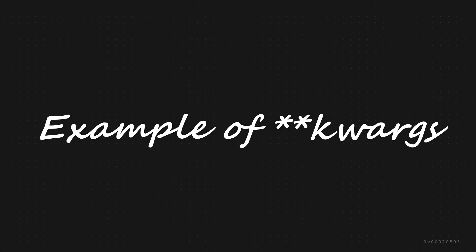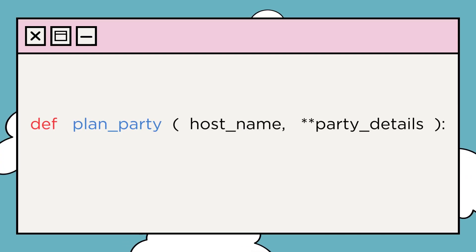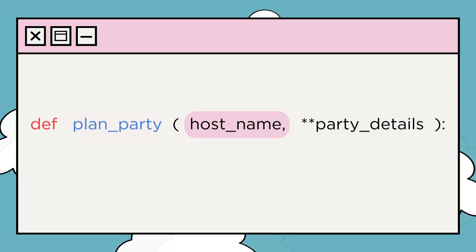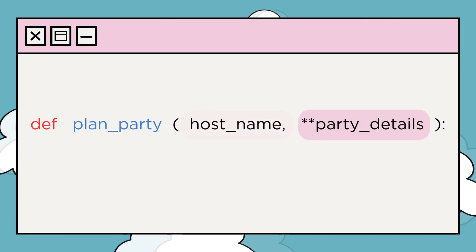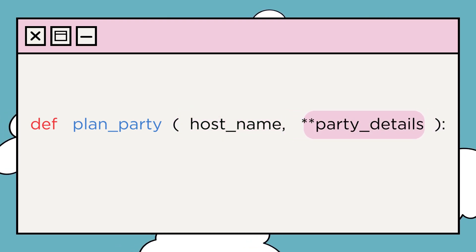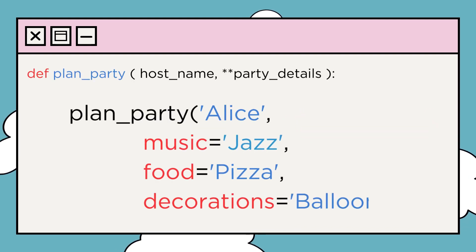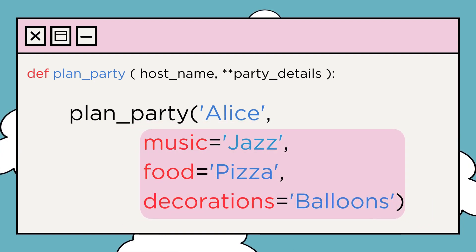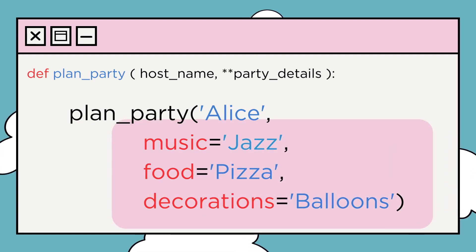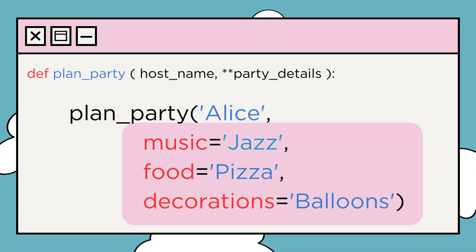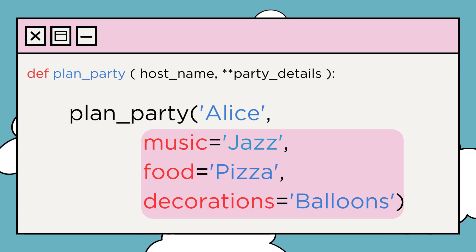Let's see how **kwargs works. Here's a function called plan_party. It takes a required argument, host_name, and then, with **party_details, it collects all the extra options you provide. When we call this function like this, Python gathers all these options into the party_details dictionary, so you can customize your party easily.